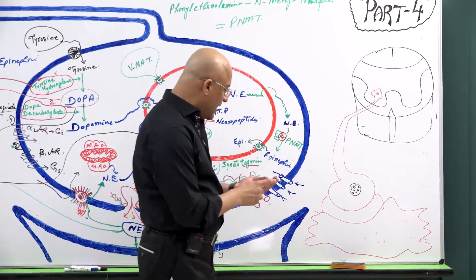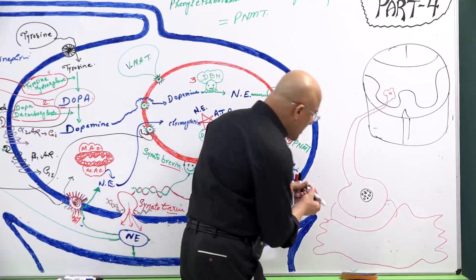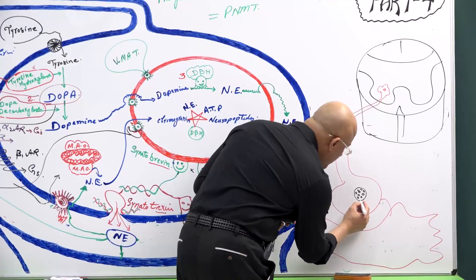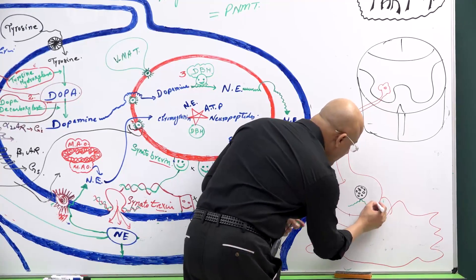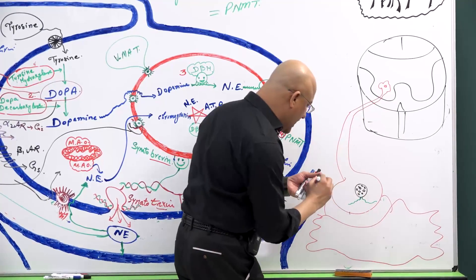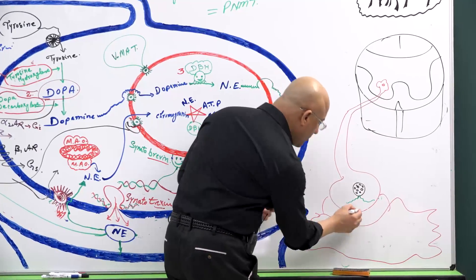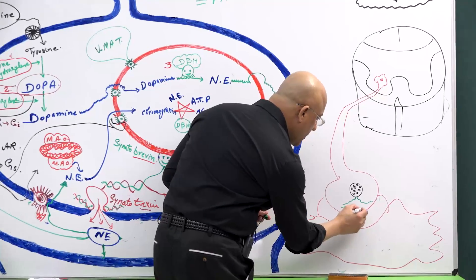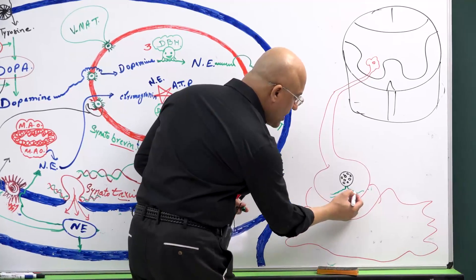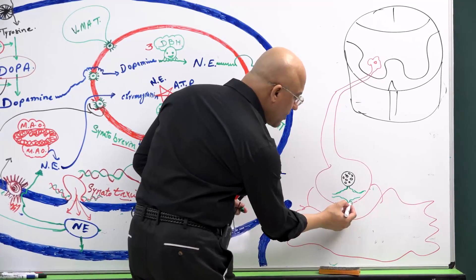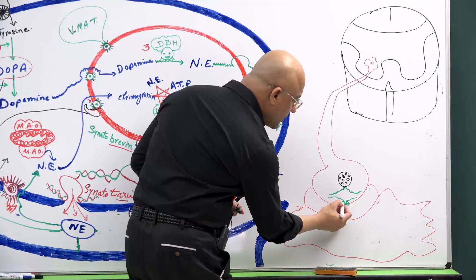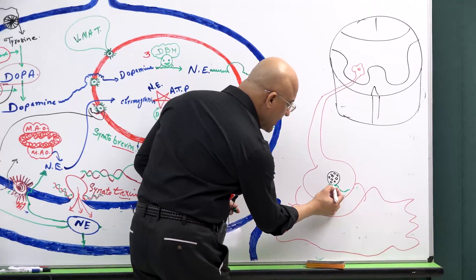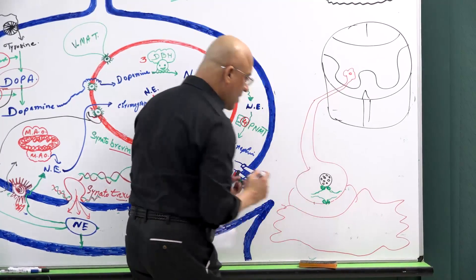Now, which proteins are involved? These are SNARE proteins — specifically v-SNAREs and t-SNAREs — present at the neuromuscular junction.